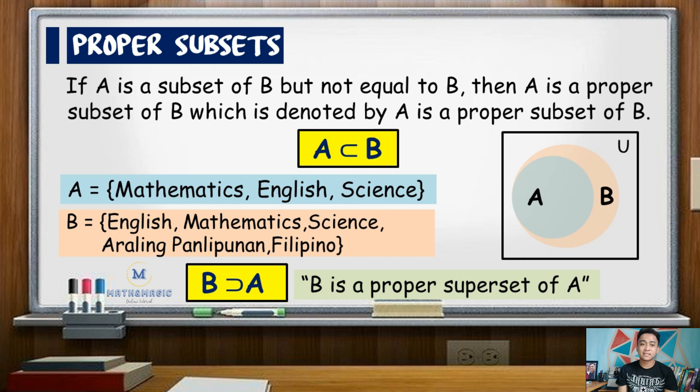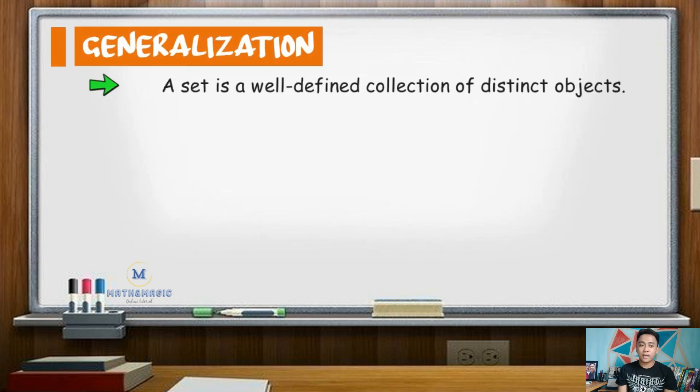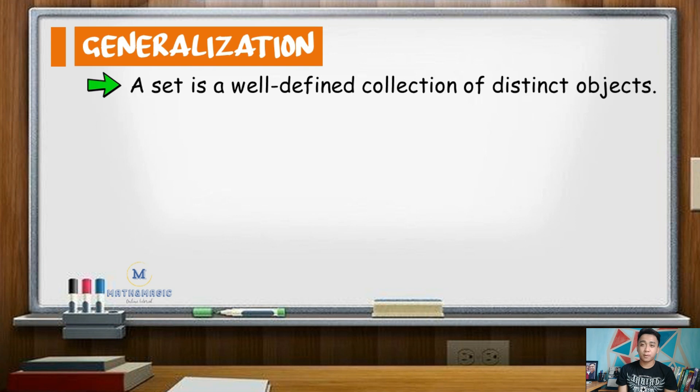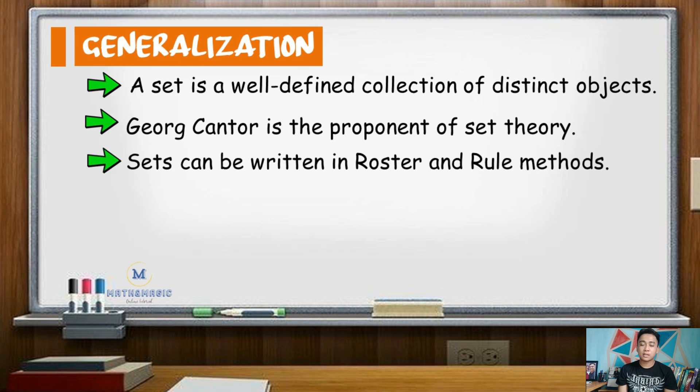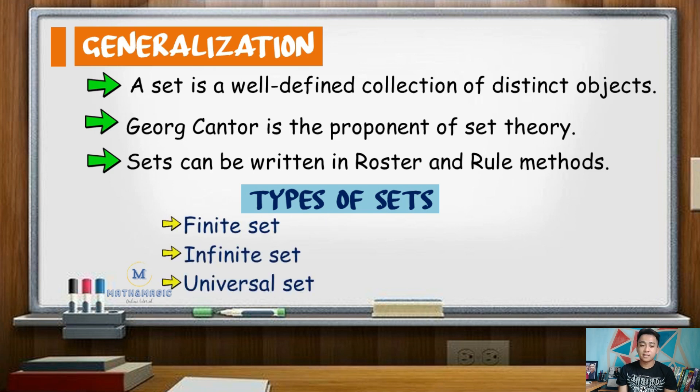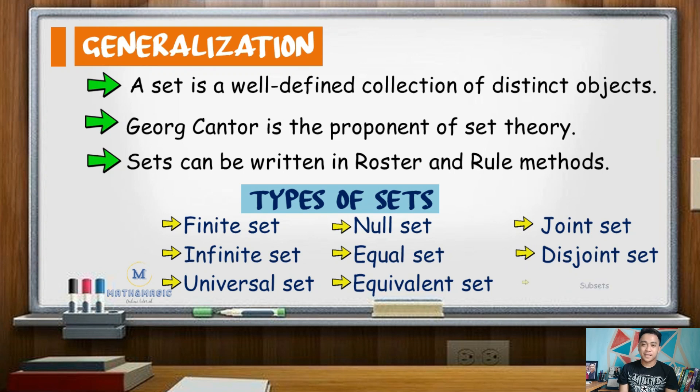To generalize, a set is a collection of well-defined objects. Its proponent is George Cantor. A set can be written in two ways. Those are roster or listing method and rule method or set builder notation. Also, set has nine types. Those are finite, infinite, universal, null, equal, equivalent, joint, disjoint, and subsets.